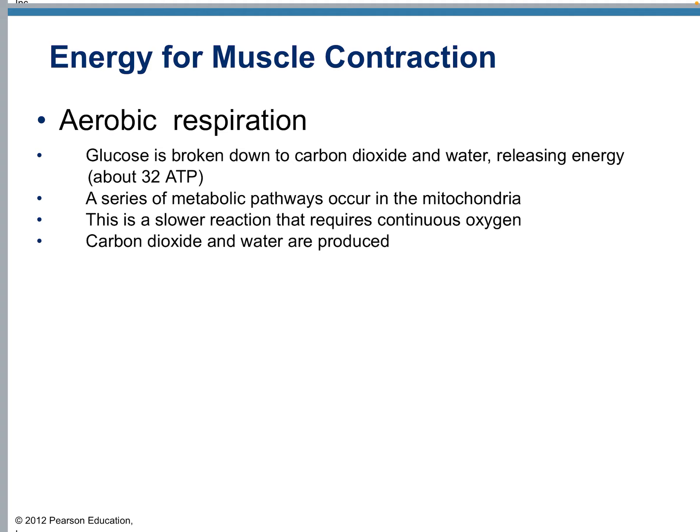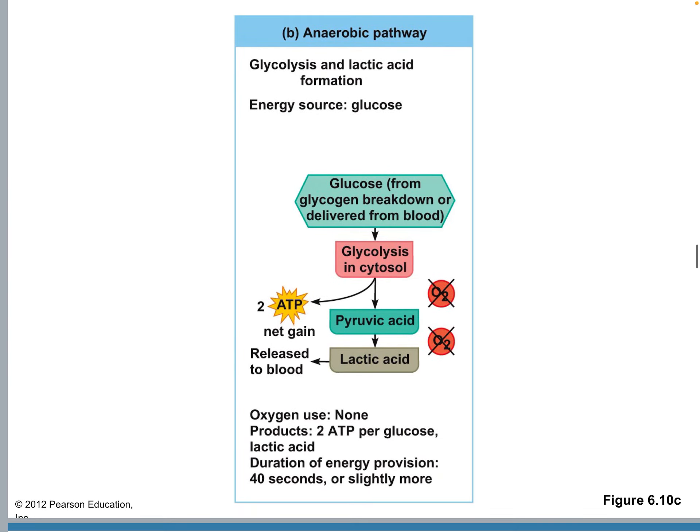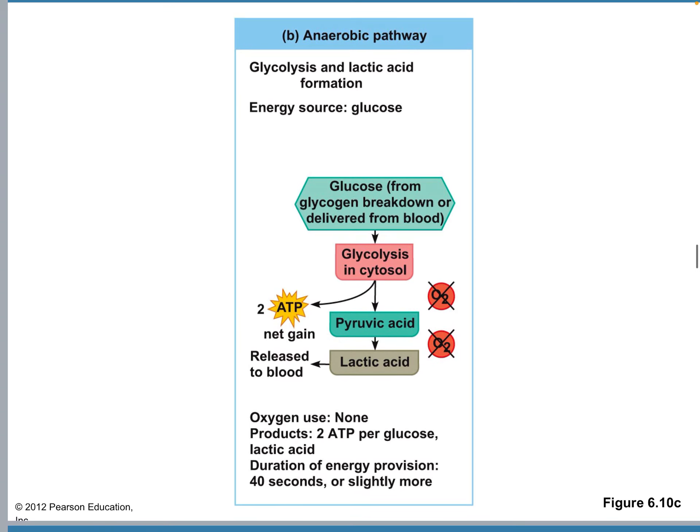Aerobic respiration is the main way you want to make ATP. Take a glucose molecule and break it down into 32 ATP through many series of metabolic pathways. This is a slower reaction that requires continuous oxygen, which is why your muscles don't always run out of energy — as long as you're not doing strenuous work, aerobic respiration can keep up. This is a dumbed-down view of glycolysis feeding into the aerobic pathways, giving you about 40 seconds of energy.